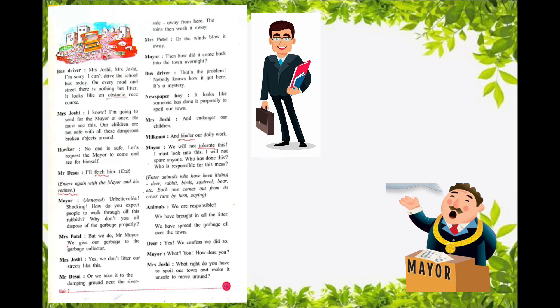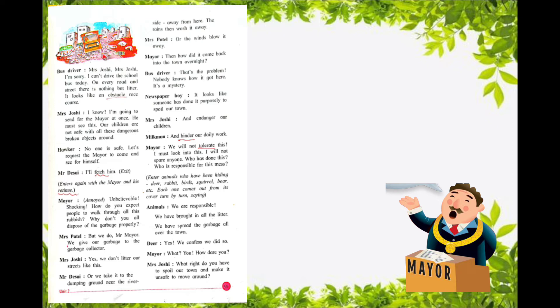The mayor also got annoyed and said, 'Unbelievable. Till yesterday there was no garbage — all of a sudden, how has this garbage come on the street? Shocking. How do you expect people to walk through all this rubbish? Why don't you all dispose of the garbage properly?' He said this to Mr. Desai, Mr. Patel, Mrs. Joshi and all.